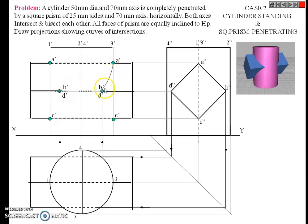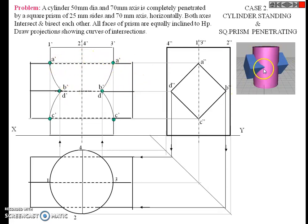So a dash to b dash is dark, and b dash to c dash is also dark. To the left side also, a dash to b dash is dark, and b dash to c dash is dark. On the back side there is a dotted curve. So we draw up to this point — a dash is dotted, b dash going inside the cylinder is also dotted, and c dash is also dotted.